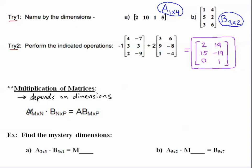If I wanted to multiply the first matrix — I called it matrix A, and it has the dimensions M by N — to matrix B, which has the dimensions N by P, I know that I can do this matrix multiplication because these two middle numbers, the number of columns of the first matrix, has to match the number of rows of the second matrix. The result will be the outer numbers: the number of rows of the first matrix and the number of columns of the second matrix.